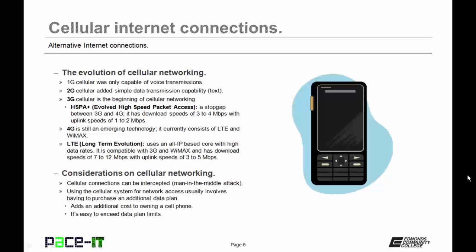3G was pretty basic — it wasn't exactly fast, but it wasn't exactly slow; it was just kind of there. One version of 3G networking you need to know about is HSPA+, which stands for Evolved High-Speed Packet Access. It was a stopgap measure between 3G and 4G, with download speeds of 3 to 4 megabits per second and upload speeds of 1 to 2 megabits per second, depending upon how far away you are from the cell tower.